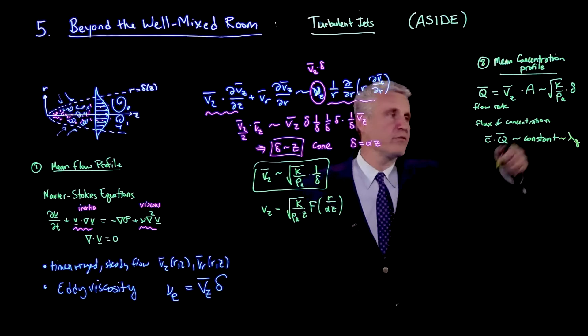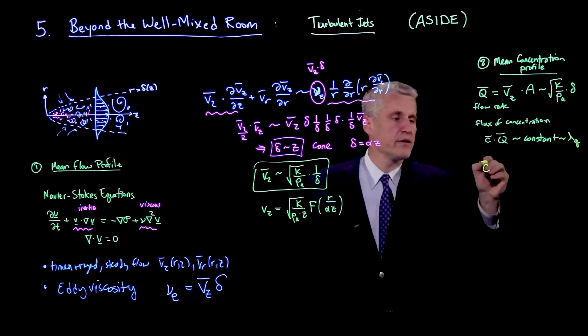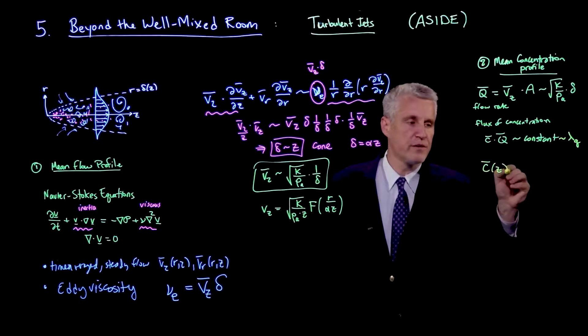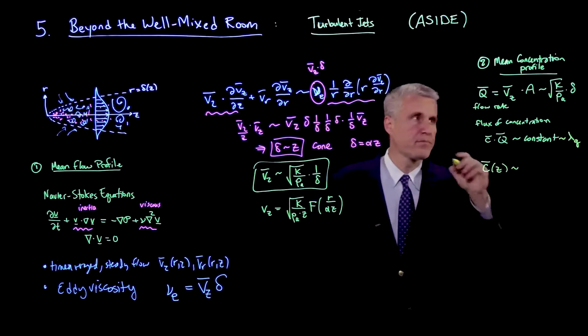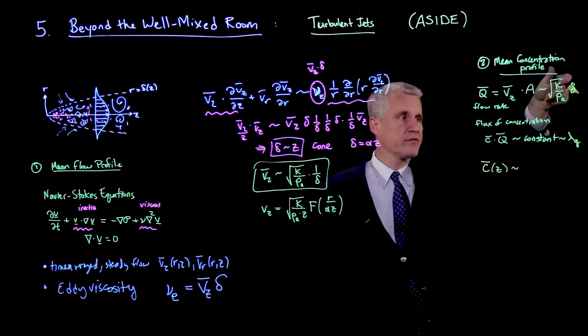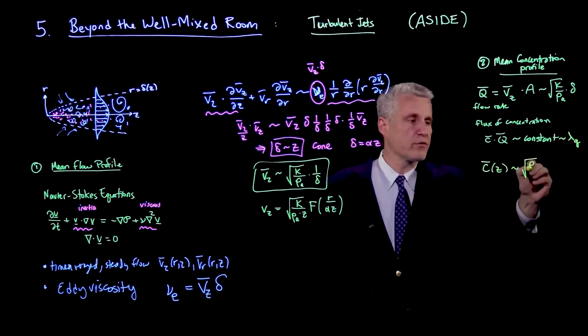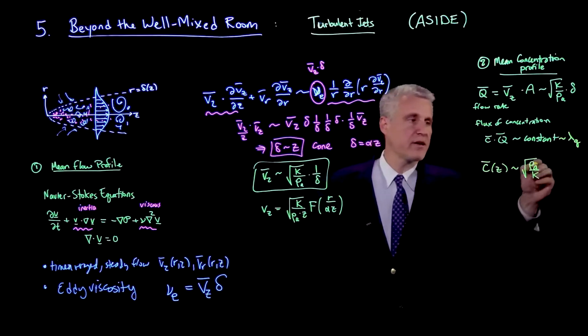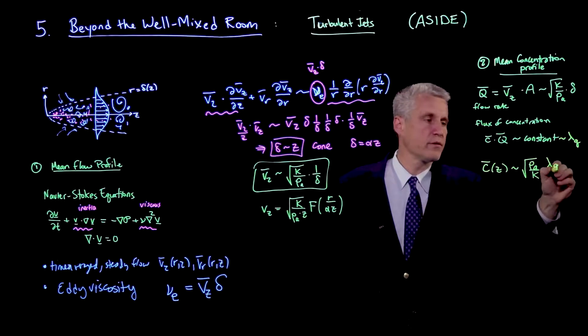And so what we find, if we substitute now, is that the concentration of infection quanta at a position z scales as, so I have to divide by q, so I get the inverse of this. So I get square root of rho a over k. And then I have lambda q over alpha z.